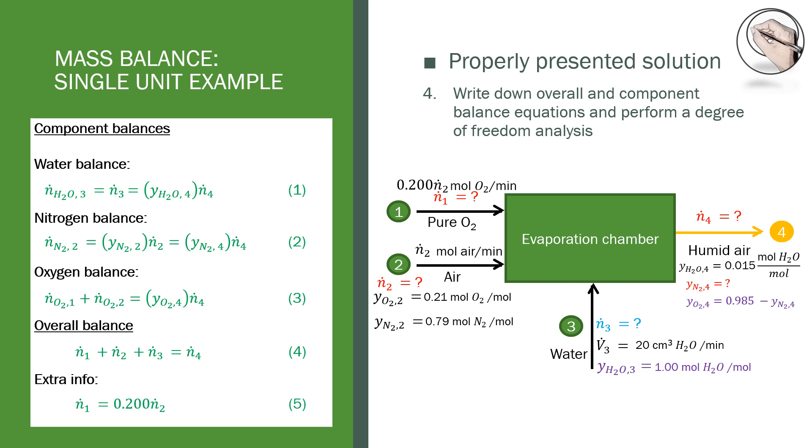Fortunately, we were given extra information, which means we have three independent equations and one extra piece of information to solve for four unknowns, so we can solve this question as we move from one degree of freedom to zero. This is called a degree of freedom analysis, which we will discuss later in the series when dealing with multiple units.